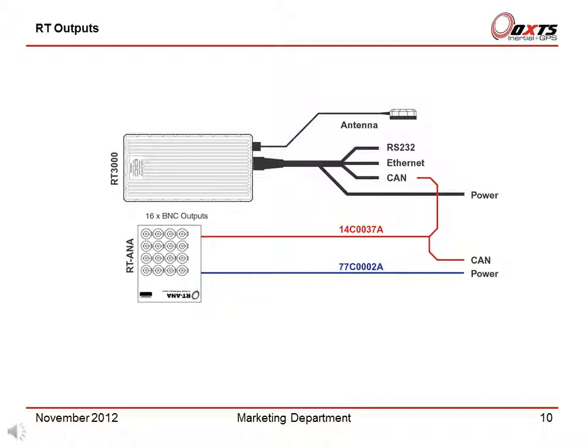If your system is designed to go to a steering robot, the RS232 may be configured for a different output format. For Ethernet, the NCOM data is also transmitted using the NDB broadcast over Ethernet. The CAN output is suitable for connecting to many data acquisition systems, and several CAN DBC files are provided to make it easier to connect the RT.